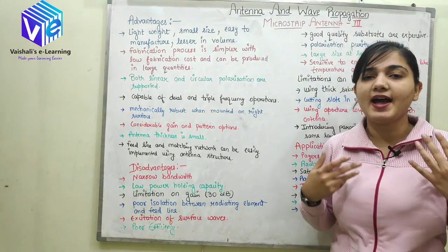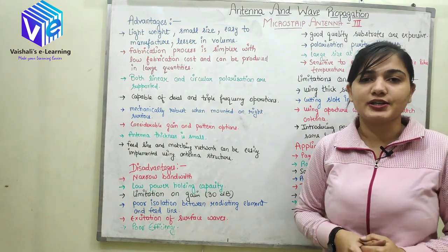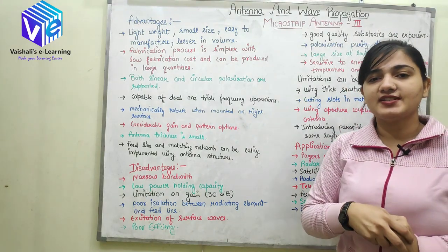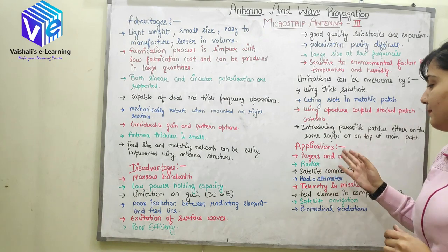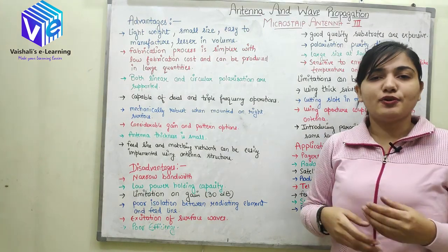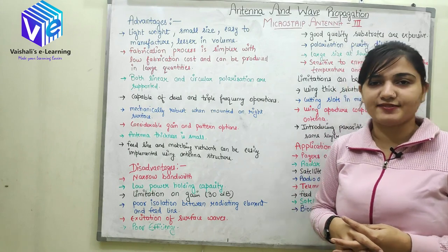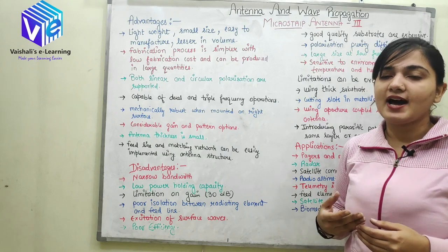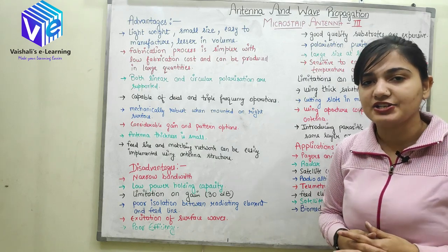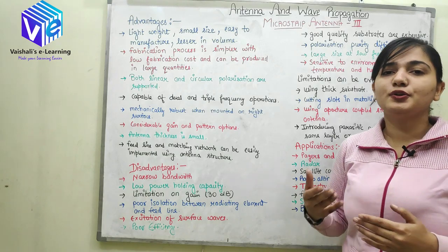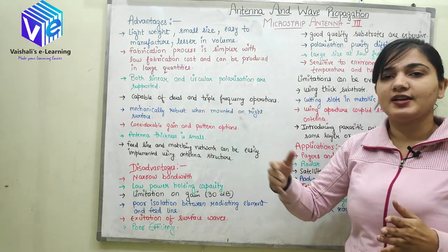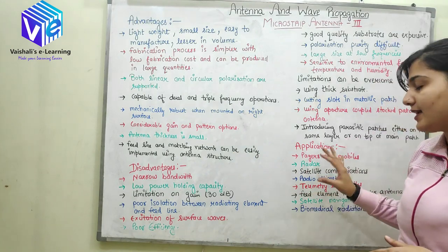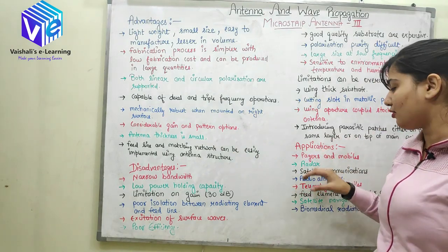Now coming to the most important part: applications. This is why this antenna is really important. The first application is in pagers and mobile phones — there is a microstrip antenna in your mobile phone as well. The next application is radar — radio detection and ranging — where it is used to detect objects and measure their speed. Radar is really important and microstrip antennas are used in it.